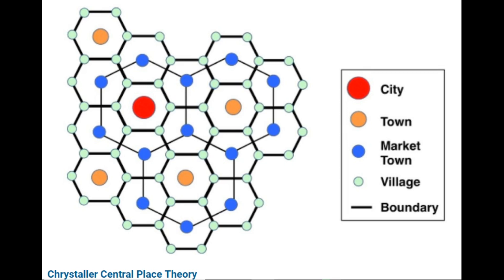Hello friends, today we are going to discuss Central Place Theory, which was given by Chrystaller. Sometimes we call it Chrystaller's Central Place Theory. Here in the picture you can see the model: red dot shows cities, brown shows towns, blue shows market towns, and small white dots show villages, while the black line shows boundaries.